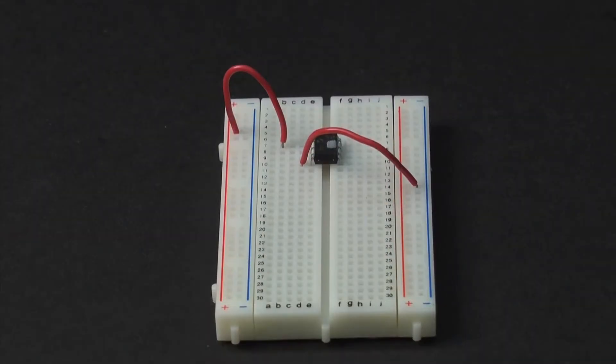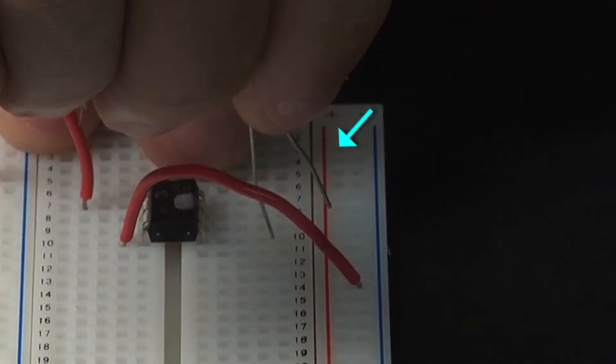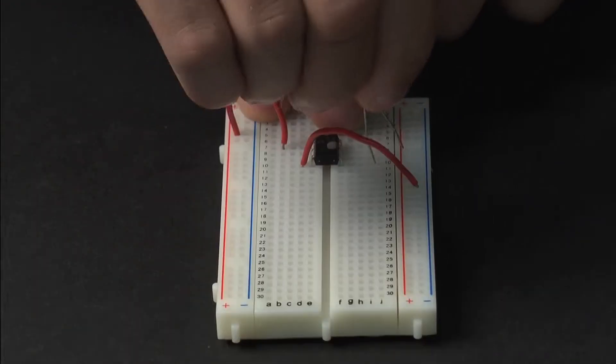Also make sure that the negative end of the LED, the shorter side, is added to the power rail.